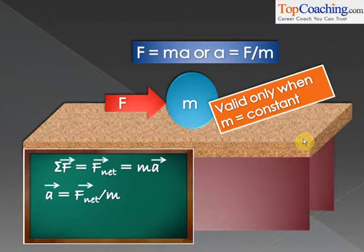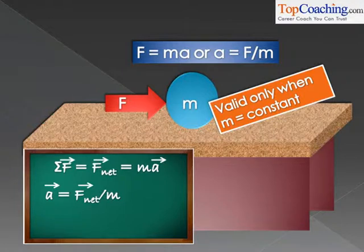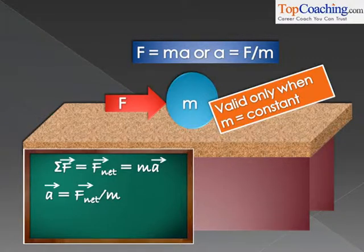One important fact regarding Newton's Second Law that you must remember is that it is valid only when mass is constant. For example, if you have a rocket that is flying upwards, in that case f is not equal to ma. The net force on the rocket is not equal to mass of the rocket into acceleration, because the mass of the rocket keeps decreasing as the rocket flies upwards. When a rocket flies upwards, it loses mass — it releases gases and a lot of substances into the air. So in that case, f equal to ma is not applicable.